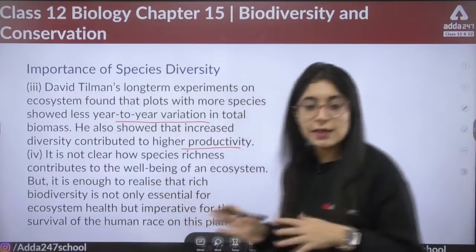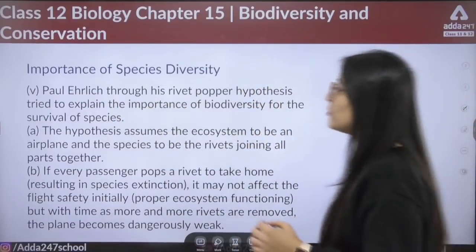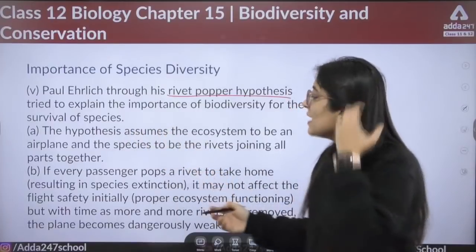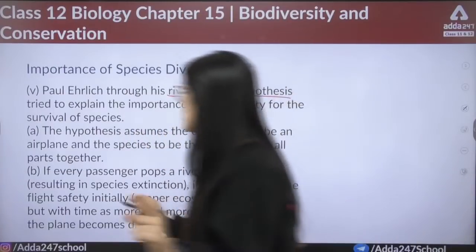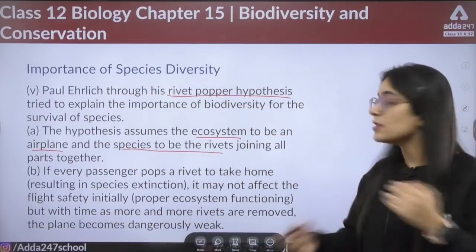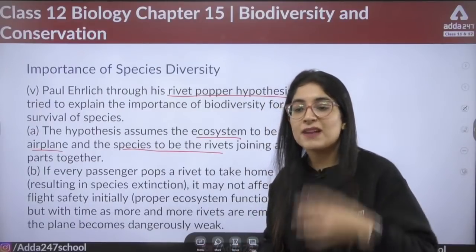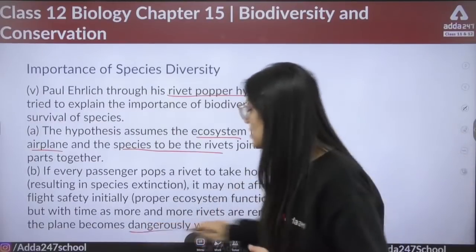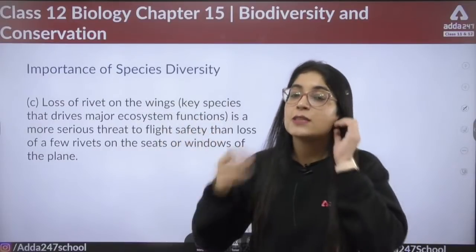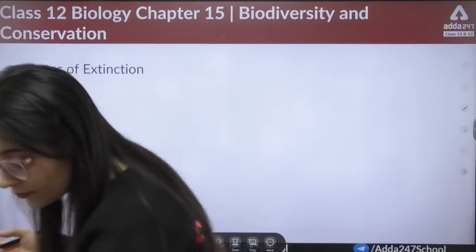How species richness contributes to ecosystem well-being is still not fully clear. Paul Ehrlich proposed the rivet popper hypothesis, assuming the ecosystem is like an airplane and species are like rivets joining its parts. If every passenger pops a rivet to take home — representing species extinction — it won't immediately affect the ecosystem. But as more and more rivets are removed, the plane becomes dangerously weak, meaning key species losses pose a serious threat to ecosystem survival.